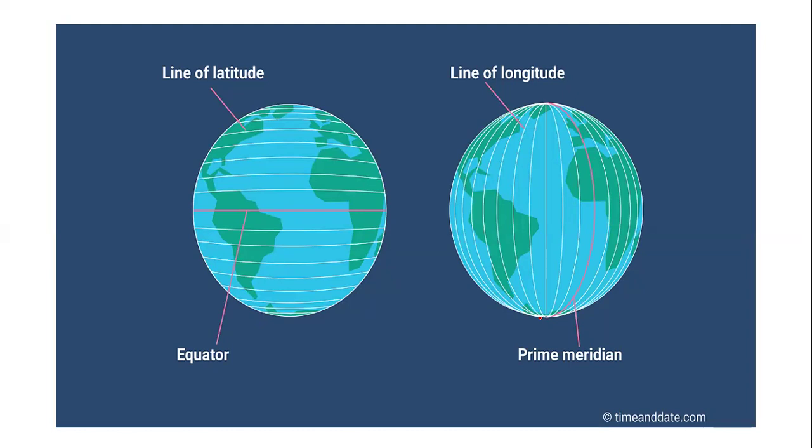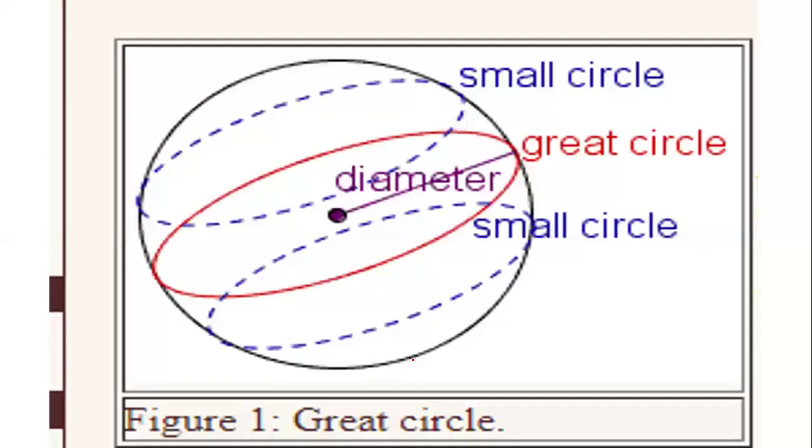Why are they called great circles? Because equator and meridians of longitude divide the earth into two equal halves. Besides equator, the rest of the parallels of latitude do not divide the earth into two equal halves.